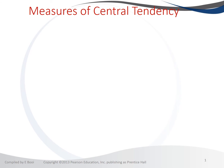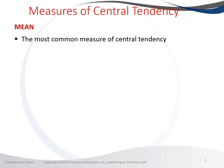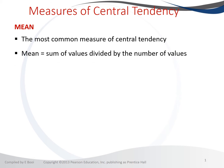Measures of central tendency are used to measure the locality of your data — where your data is located. They are also called measures of central location, and these terms mean one and the same thing. There are three types: the mean, the median, and the mode. We'll start with the mean, which is the most common measure of central tendency and represents the average of all values.